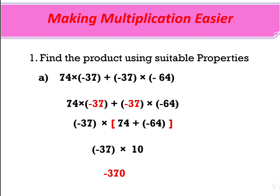37 × 10 = 370. There is only one negative integer, so the answer should be negative: −370. This is the new method of multiplication — we used the distributive property, distributing minus 37 to both parts.